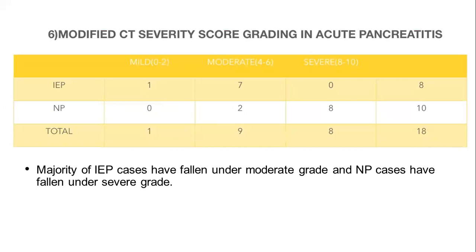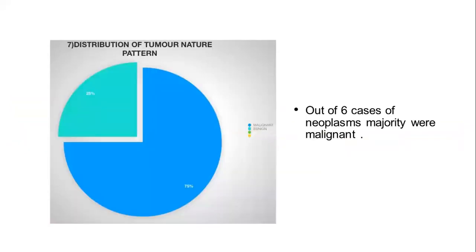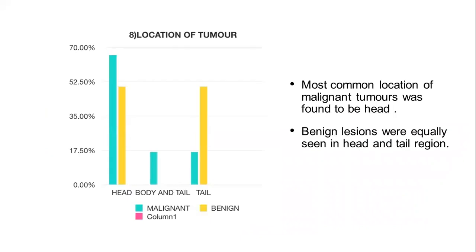Modified CTSI/CTBRT score varying in acute pancreatitis. Majority of interstitial edematous pancreatitis cases have fallen under moderate grade and necrotizing pancreatitis cases have fallen under severe grade. Distribution of tumor nature: out of 6 cases of neoplasms, majority were malignant. Location of tumor: the most common location of malignant tumors was the head of the pancreas. Benign lesions were equally seen in the head and tail region.